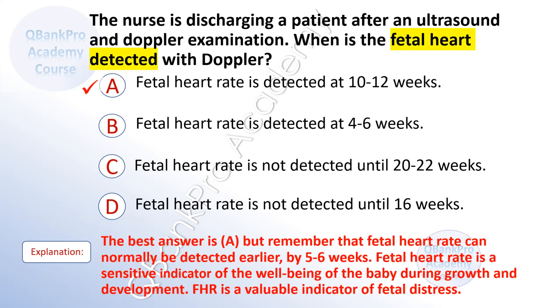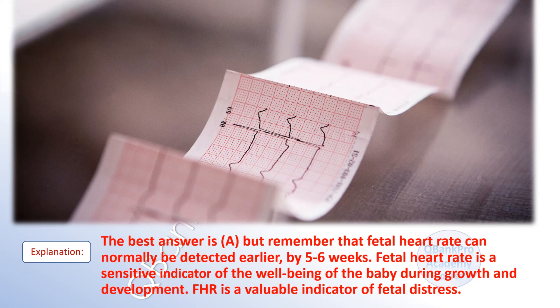The correct answer is A — fetal heart rate is detected at 10–12 weeks. Remember that fetal heart rate can be detected earlier, by 5–6 weeks. Fetal heart rate is a sensitive indicator of the well-being of the baby during growth and development, and is a valuable indicator of fetal distress.